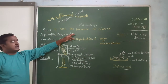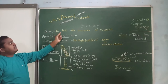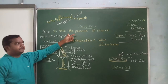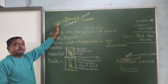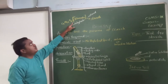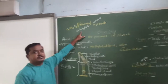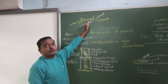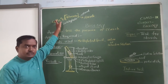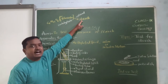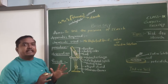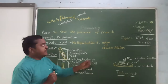Good morning students. Today's class is about testing the presence of starch. Before that, we will discuss what starch is. In the photosynthesis process, glucose is prepared — glucose has the formula C6H12O6. Glucose is a carbohydrate sugar, and after preparation, it is stored in the form of starch. So today we will test whether starch is present in the leaves of plants.